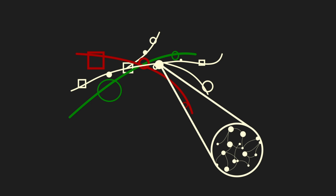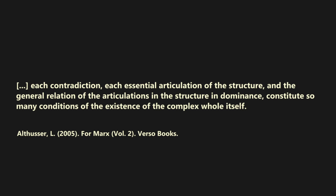Instead, the complex whole identified by Marxist theoretical practice is structured in dominance. It has a principal contradiction and secondary contradictions, the former being the primary structuring element. And thus, the whole cannot be envisaged without its contradictions, without their basically uneven relations. Althusser contends that each contradiction, each essential articulation of the structure, and the general relation of the articulations in the structure and dominance constitute so many conditions of the existence of the complex whole itself.